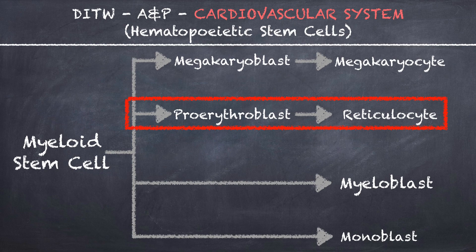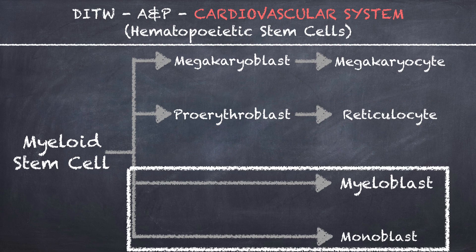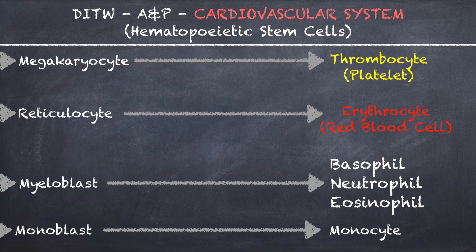For the red blood cell, the myeloid stem cell will change from a proerythroblast into a reticulocyte. And for white blood cells, they will either differentiate into a myeloblast or a monoblast. From this point, each of these cells will then differentiate into either the platelet, red blood cell, or one of these four white blood cells, which include the basophil, neutrophil, eosinophil, and monocyte.